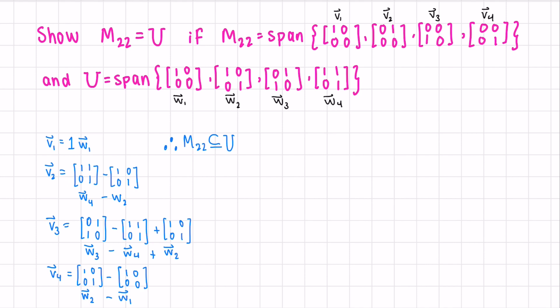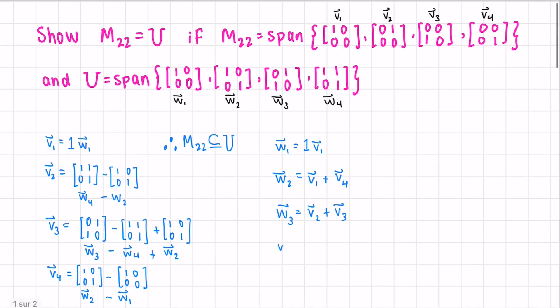To show the opposite inclusion, let's show the w's can be represented as linear combinations of the v's. w1 is clearly 1*v1. w2 is v1 plus v4. w3 has 1s along the anti-diagonal, so we add v2 plus v3. And w4 is equivalent to v1 plus v2 plus v4. So now we've shown that U is included in M22. Because we've shown inclusion in both directions, U equals M22.